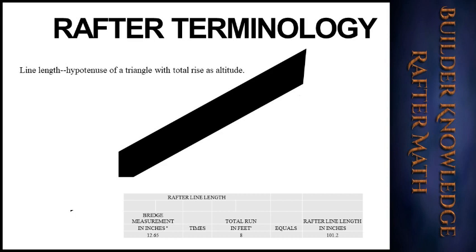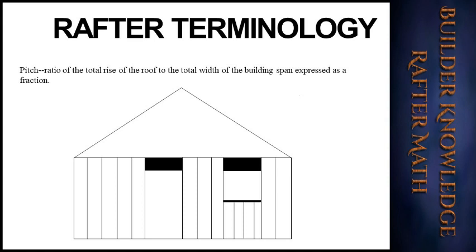If you ever need to cut the rafter as shown, it is also known as a mule rafter. The pitch of a roof is the ratio of the total rise to the total width of the building span, expressed as a fraction. We normally use the slope, such as a 4/12 or 5/12. For example, a 1/6 pitch as a fraction: to change it into a slope, 24 is the given number for pitch-to-slope conversion. 6 goes into 24 four times, giving us a 4/12 roof.